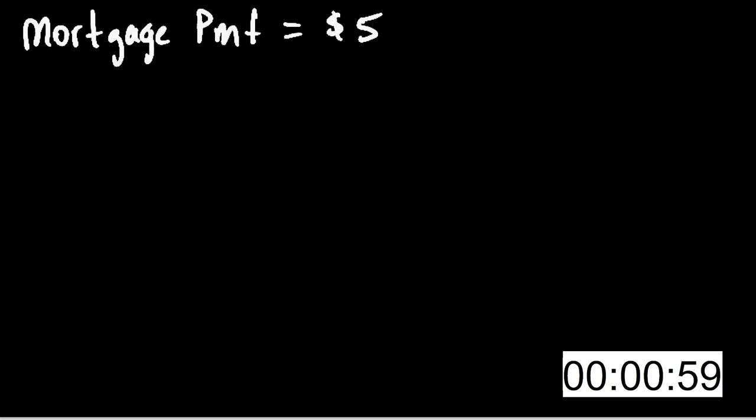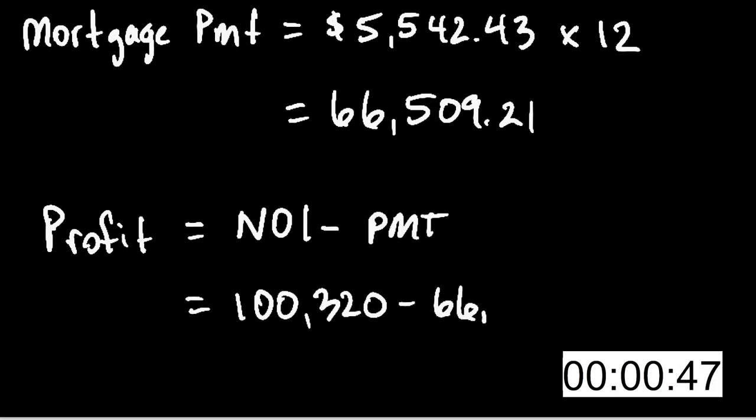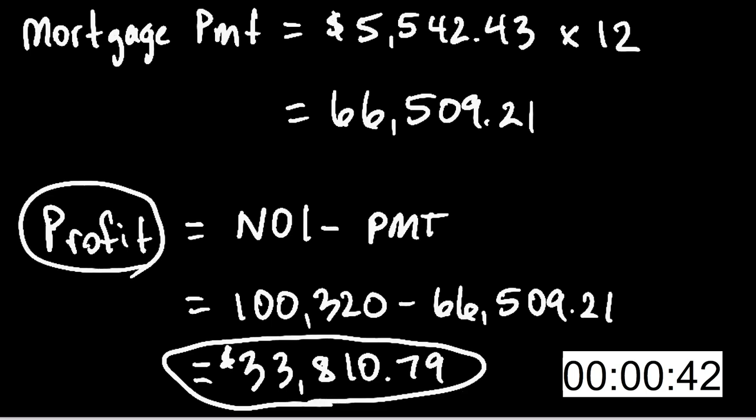You're probably going to be borrowing money, so let's calculate your free cash flow: net operating income minus mortgage payments. The bank will lend 75% of the purchase price, so the loan balance is $750,000 at a 7.5% interest rate. With a 25-year amortization schedule, using a financial calculator or a free online mortgage calculator, the monthly payment is a little over $5,500 a month. Multiply by 12 and you get an annual mortgage payment of about $66,500, leaving a net profit of about $33,000.